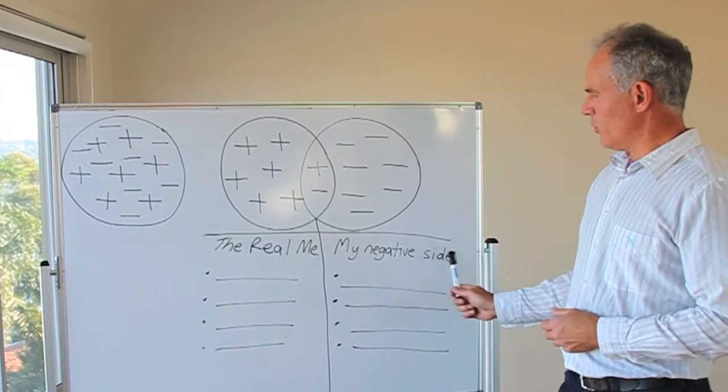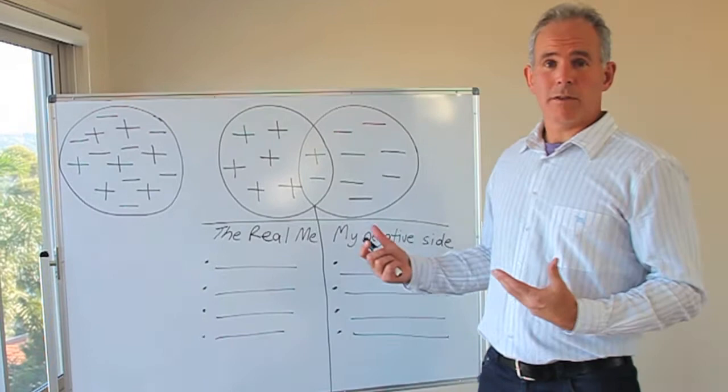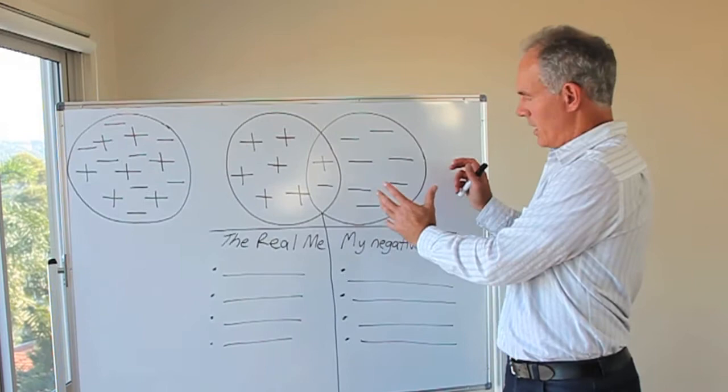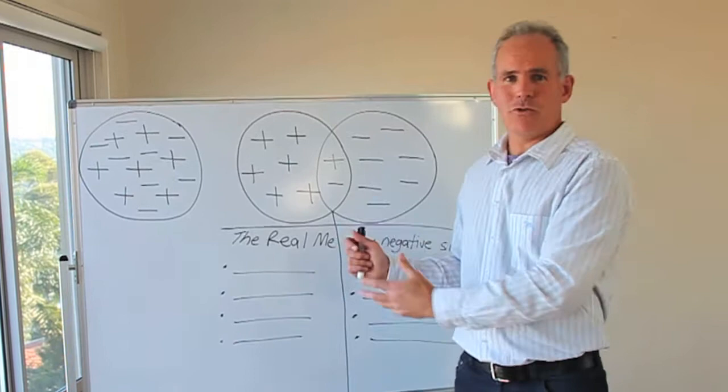Some people call it my dark side or my pessimistic side or some people it's a heavy weight or they might have a really descriptive way of describing it. But in giving that negative side of character, it does help to help you in your day-to-day life when you're trying to deal with things. It does help you to think, hang on, I don't want my negative side to be making my decisions here. I want the real me to be doing. So what does the real me want to do here?